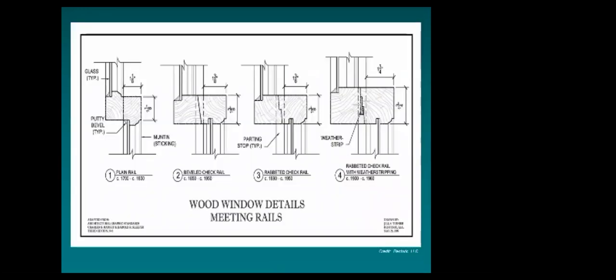Air infiltration at the meeting rail is a key concern. Meeting rails evolved over time — early plain rails from the 1850s and earlier, up to rabbeted check rails from around 1900 onward — which gives you options for different types of weather stripping depending on which type you have on your home.